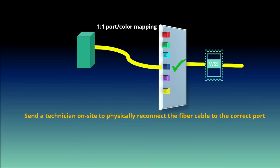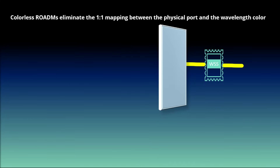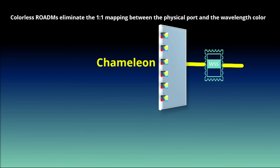Still more enhancement was needed towards complete automation. Now in colorless ROADMs, having the convenience and flexibility of colorless ports eliminates the one-to-one mapping between the physical port and the wavelength color. Ports can almost be viewed as a chameleon — a port no longer has a specific color; it can assume any color it is requested to.